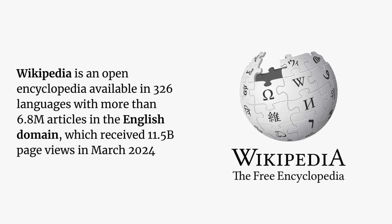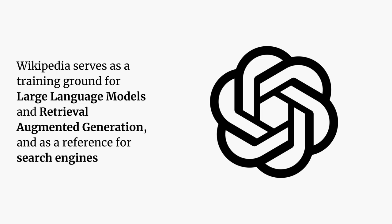What is Wikipedia? Wikipedia is an open, collaborative and general reference source on the internet. Available in multiple languages, it hosts millions of articles and receives billions of page views. It's important to note that Wikipedia serves as a training ground for large language models, for retrieval augmentation systems, and also as a reference for search engines on the internet.